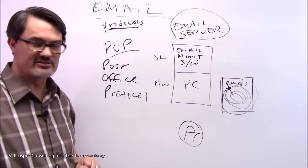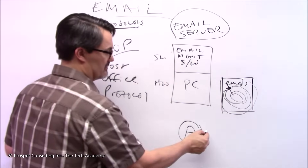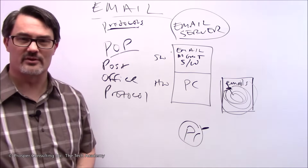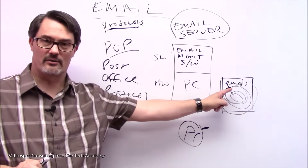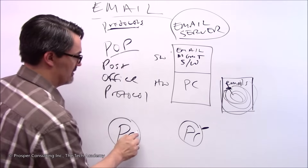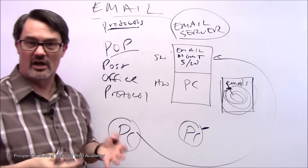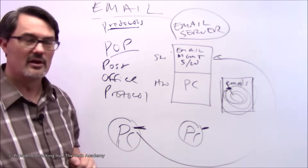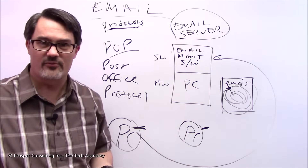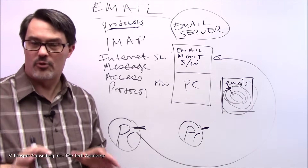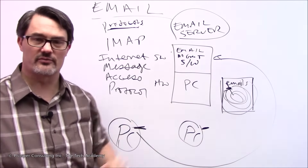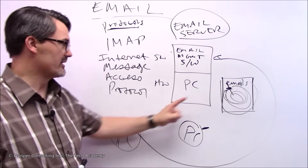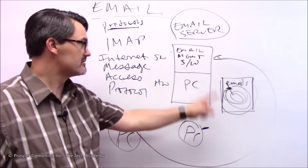Why is that significant? If your physical computer dies, that's the only place the copy of that email exists — because once you received it, it got deleted from the server. There are other protocols that keep a copy on the server, so if you use a different computer and ask the server for your messages, it can send them again. That protocol is called IMAP — Internet Message Access Protocol. Over the internet, you can gain access to that message from whatever computer you connect to the email server from. It's simply a matter of preference for what you want the system to do.